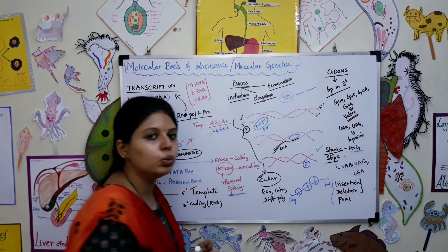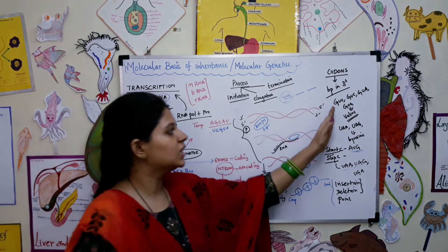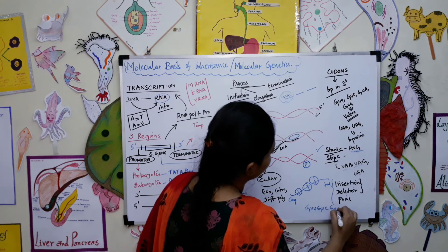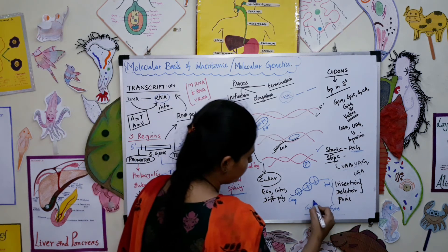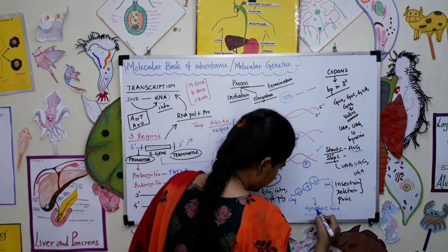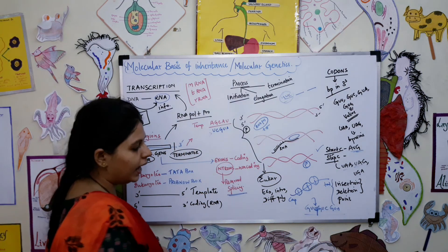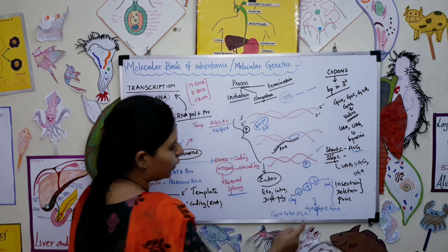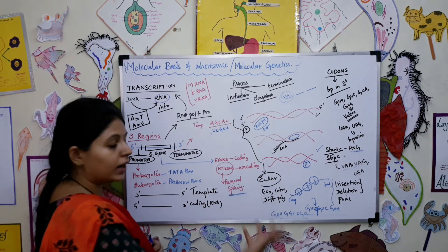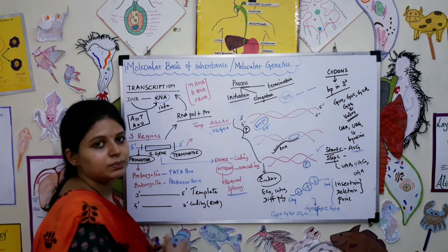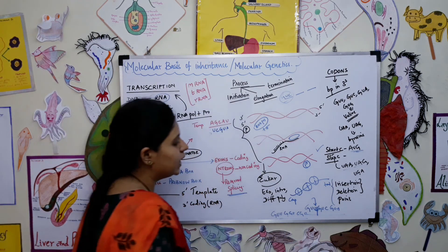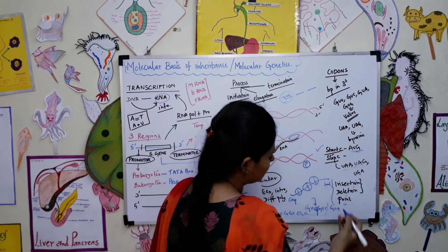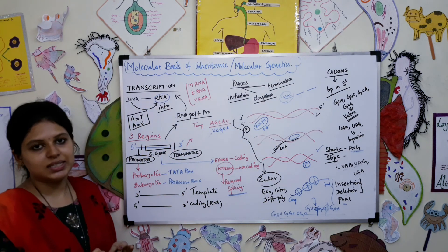Mutation is any change in the triplet code. For example, in the sequence GUU GUC GUA, insertion is where a single base pair is inserted — making it GUU GGU CG UU — and the codon sequence is changed so some codons can no longer code for amino acids. Deletion is where one base pair is removed. Point mutation is where insertion or deletion occurs at a specific point.